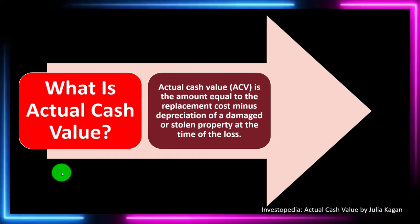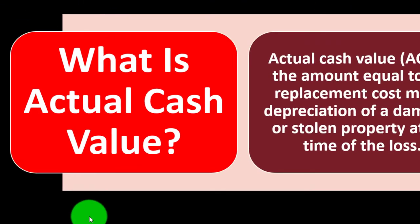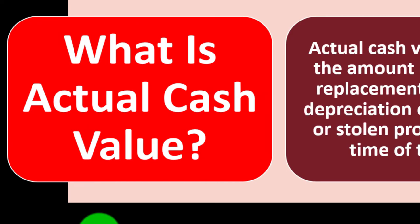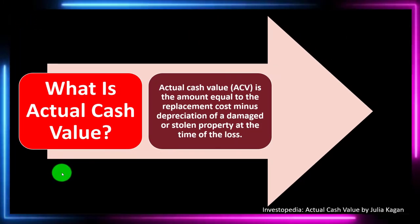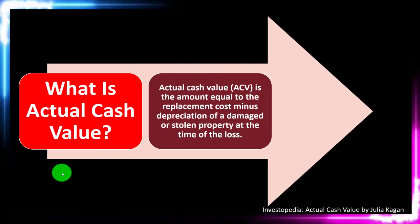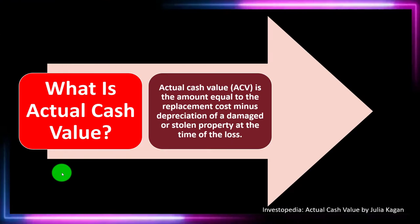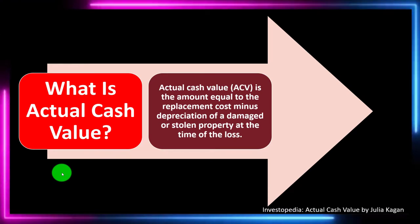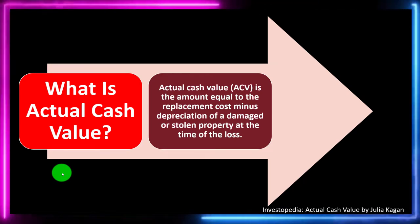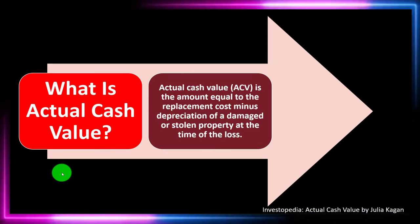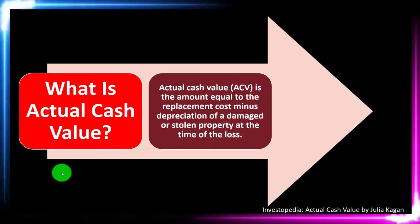We could see the term actual cash value instead of, say, replacement cost — which is the amount equal to the replacement cost. We start at the replacement cost: how much it would cost to replace the piece of property at that point in time.